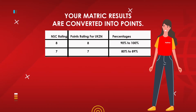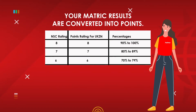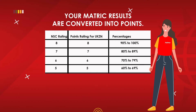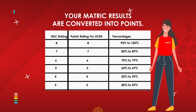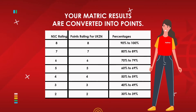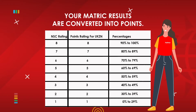Your top seven matric marks are converted into points. To calculate your APS, you will need to add your six best subjects as per the point system, excluding Life Orientation.